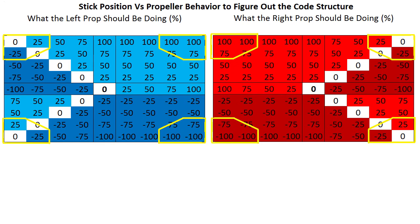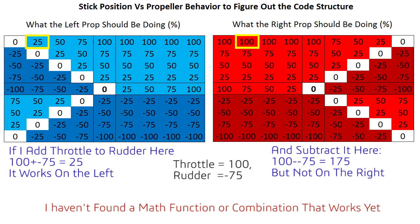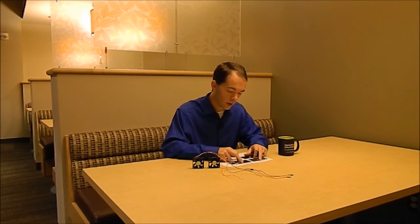You can't simply take the throttle position for both propellers and then subtract or add the rudder position, because when you get into the extreme corners, you get values that go over 100%, which is bad. If you try to constrain it to 100%, the numbers don't give the performance or behavior I'm looking for. I also tried using a unit circle with sines and cosines and ran into the exact same problem — propellers going more than 100%, which isn't possible. We need to keep everything between minus 100% and plus 100% on both rudder and throttle.